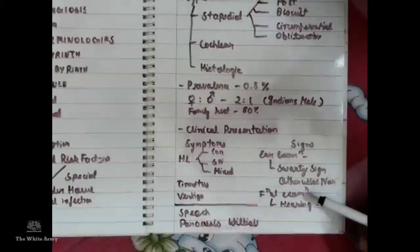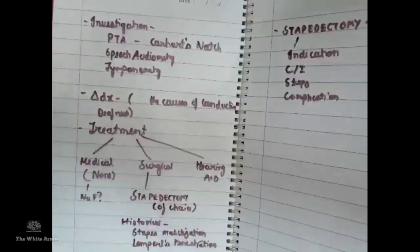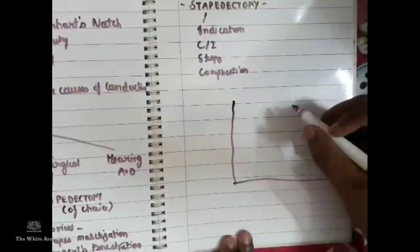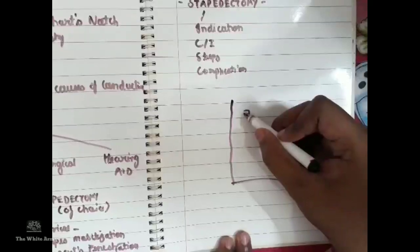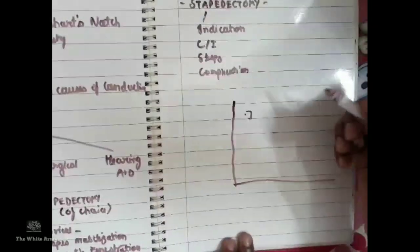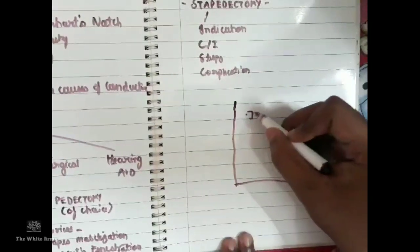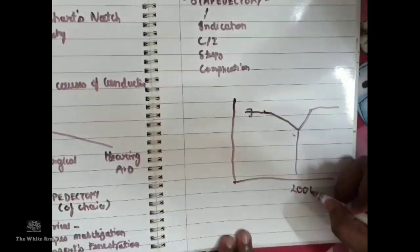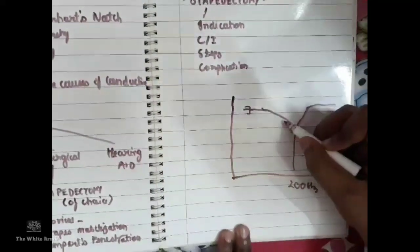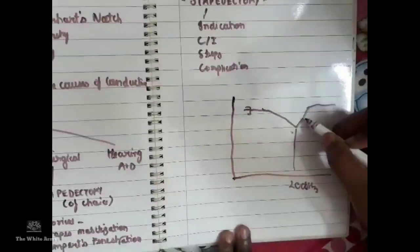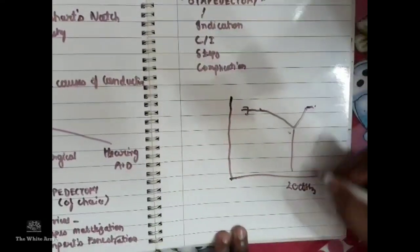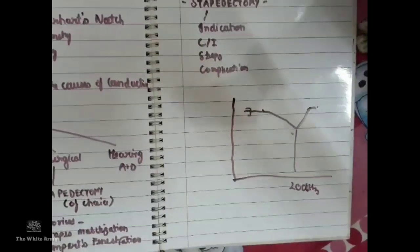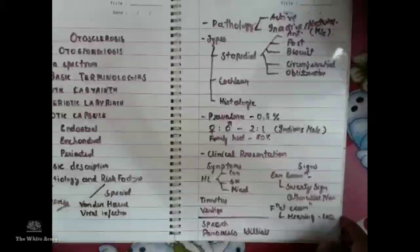Otherwise the ear will appear normal, and functional examination will reveal hearing loss elicited by tuning fork tests. On pure tone audiometry, we see the characteristic Carhart's notch: on the bone conduction graph, the threshold dips at approximately 2000 Hz and then rises again at higher frequencies. This notch disappears after a successful surgical operation.